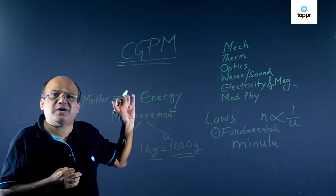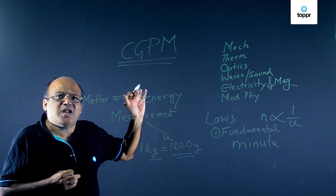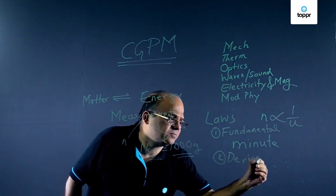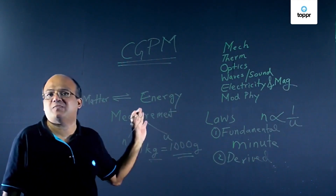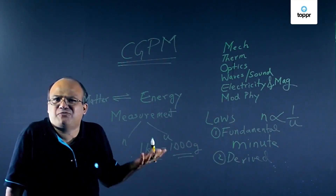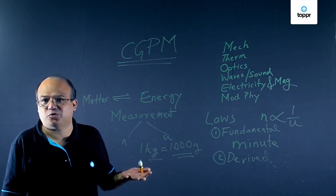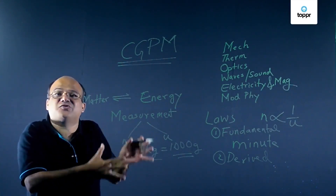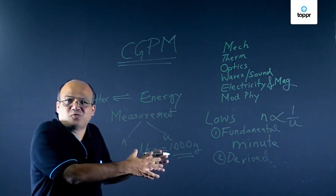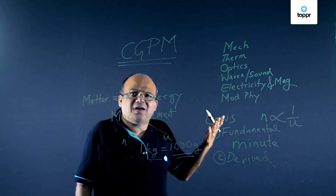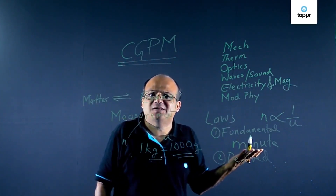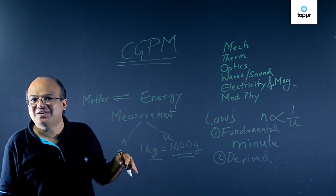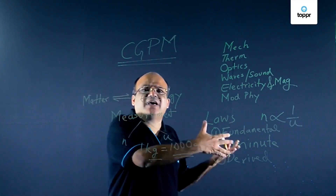So these are fundamental quantities. Now we have derived quantities. Units of derived quantities depend on the units of fundamental quantities. Like volume — the unit of volume is meter cube, which depends on the unit of length, meters. So volume is a derived unit. Let's look at density — the unit of density is kg per meter cube, which depends on the unit of mass and the unit of length. So all these are derived quantities.